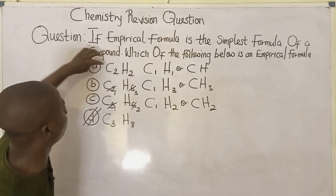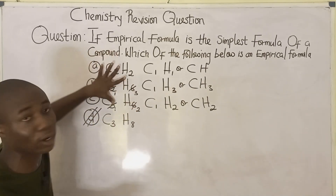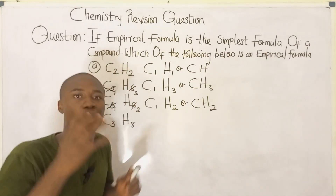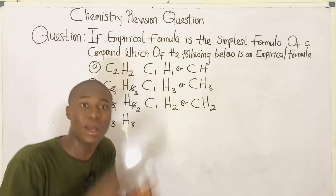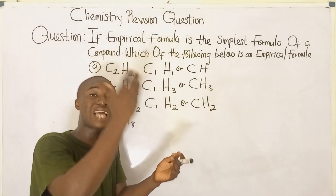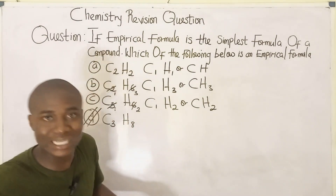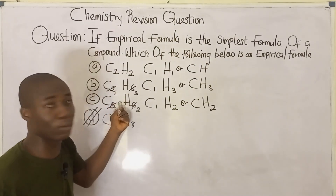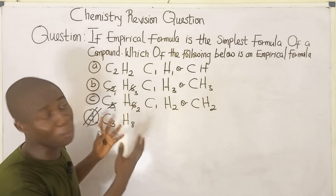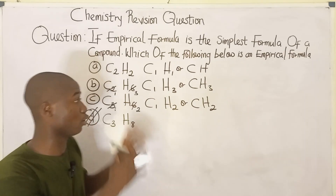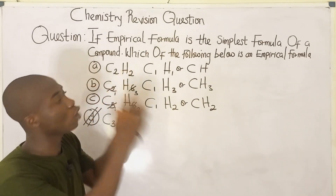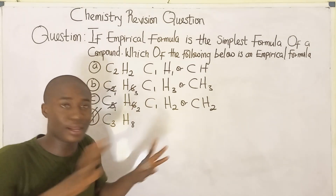So the answer is option D. Options A through C are called molecular formulas, because molecular formula is the actual form a compound can exist — and it is the molecular formula that can be broken down to get the empirical formula. Option D is the empirical formula. Solving questions on empirical and molecular formula is not difficult.